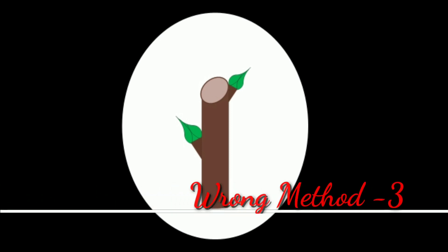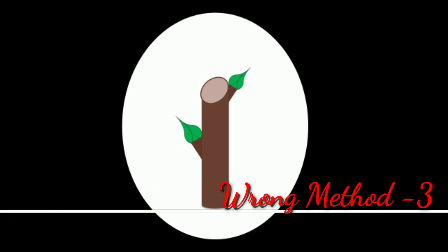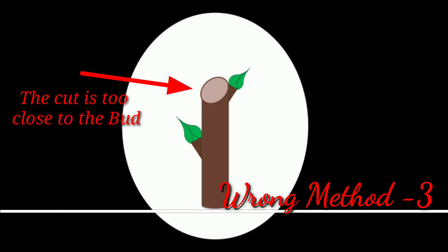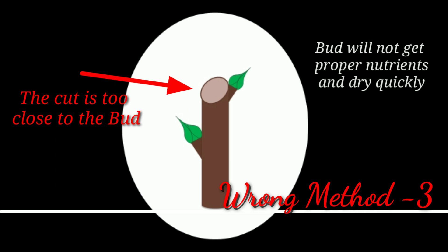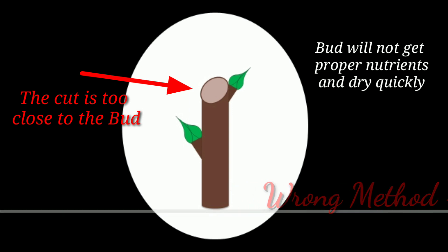Now let's see this third example of the wrong practice. In this picture you can see that the cut is angular and opposite to the bud direction, but it is too close to the growing bud. Due to this close cut, the branch bud will not get proper nutrients and will dry quickly. So we should also avoid this wrong practice of the pruning process.